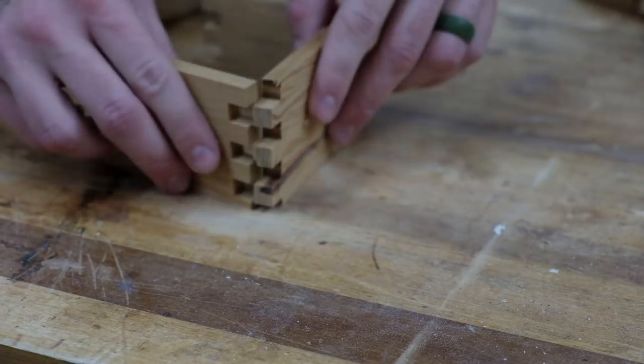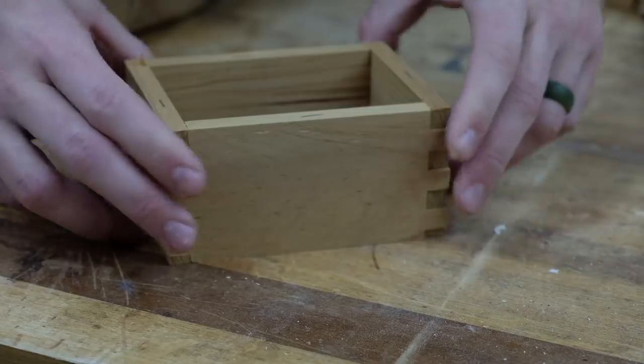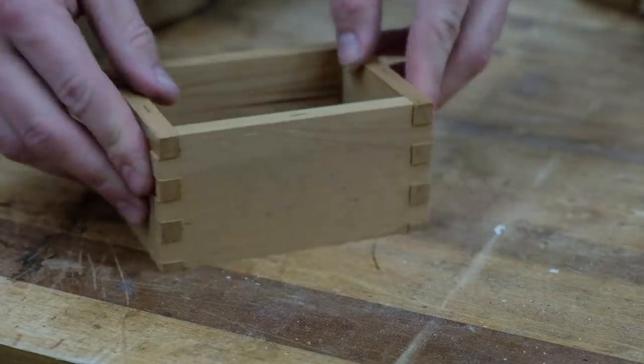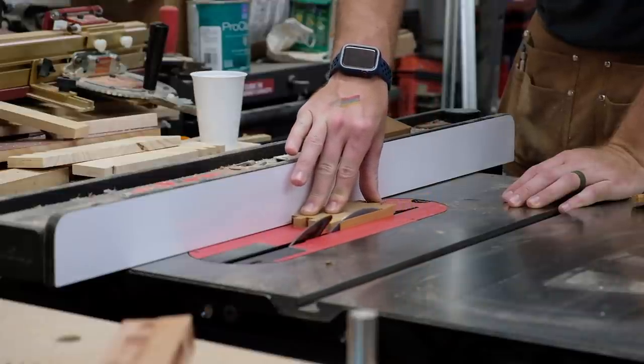And here you can see the sort of fit I was able to get. Not too snug, but it holds itself together without glue. And when possible, I like to rip the last partial fingers off the pieces. This is just a design choice, and I think it looks better to only have full fingers on the box.